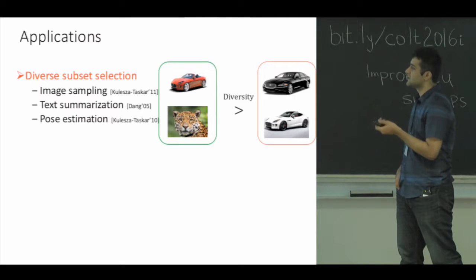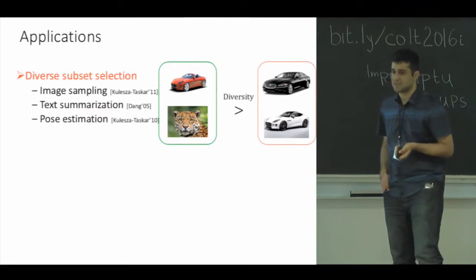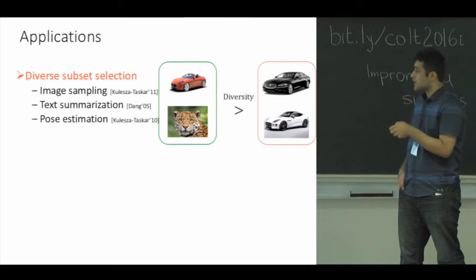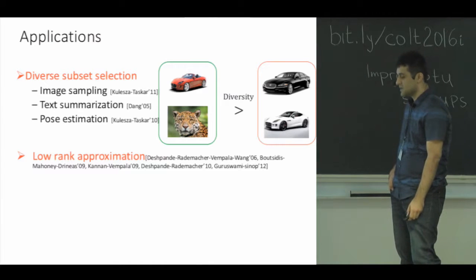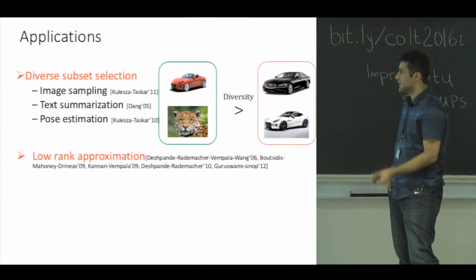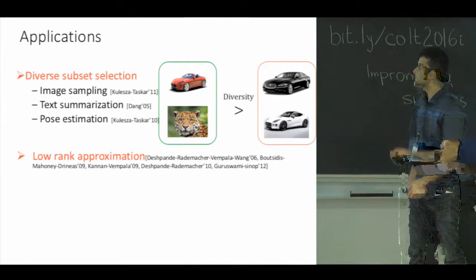Some examples of applications of k-DPP sampling in this area are diverse image sampling, text summarization, and pose estimation. On the more theoretical side, this problem has close connections to the problem of low-rank approximation, where given a number k and a matrix, you want to find another matrix of rank at most k which is closest to the input matrix in the Frobenius norm.